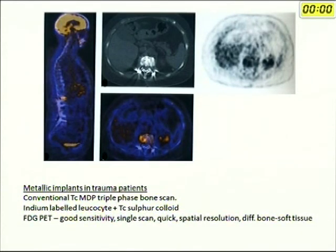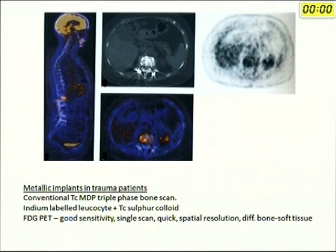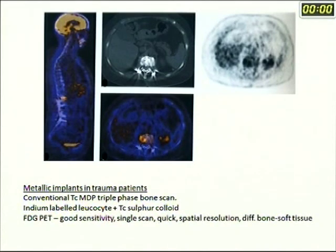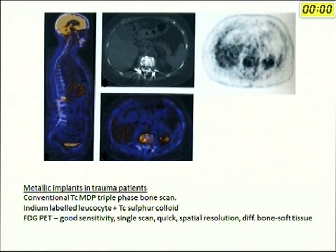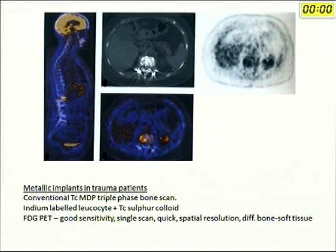PET has very good sensitivity, requires only a single scan, is quick, and has good spatial resolution. So even with its false positivity and false negativity, PET can still give you valuable clues, especially when combined with all other clinical and laboratory data.